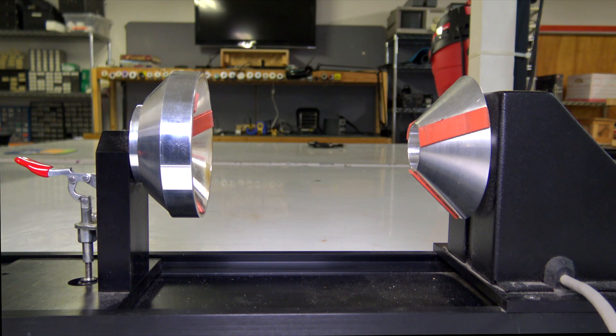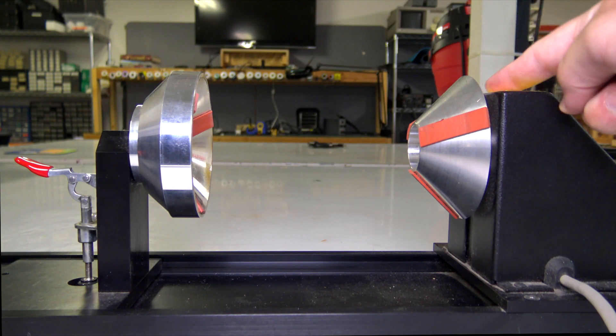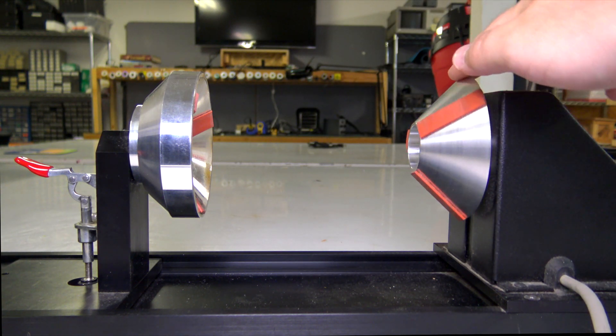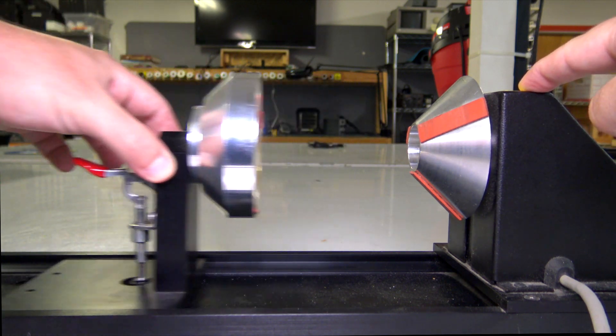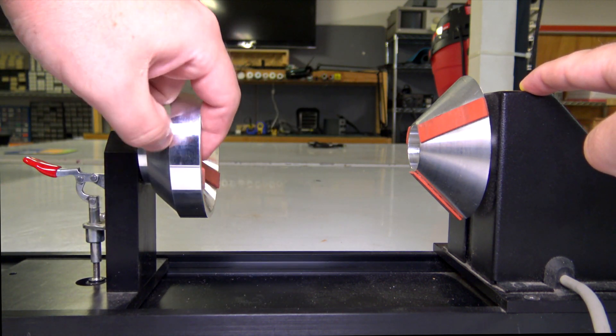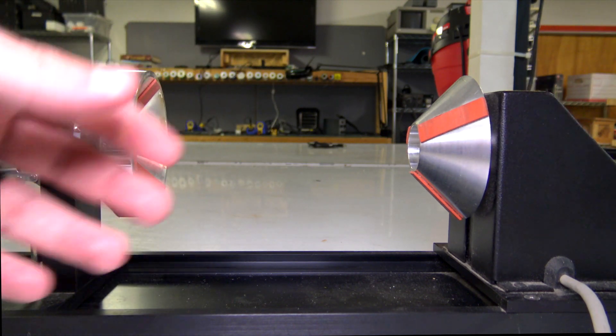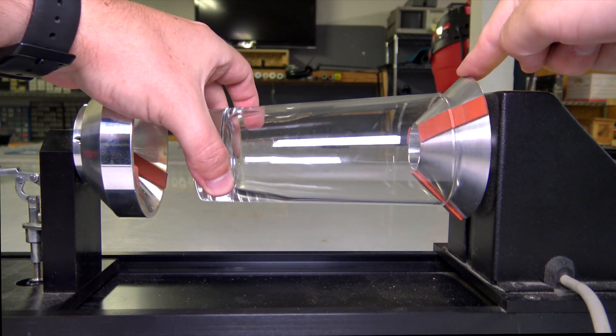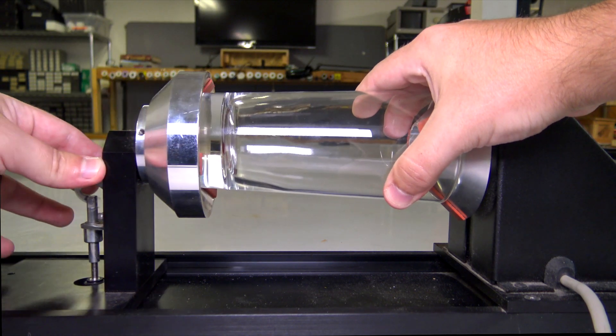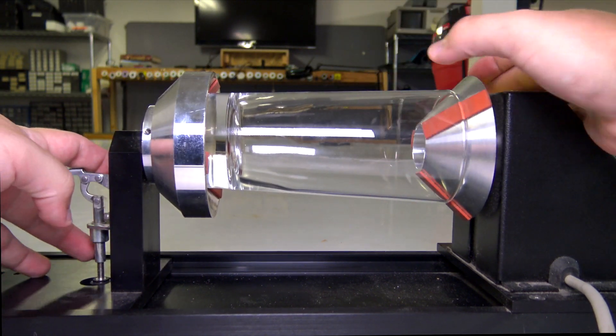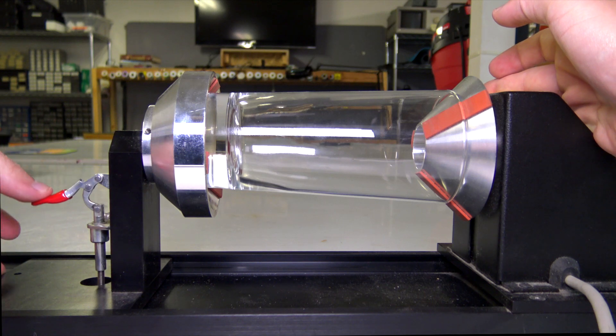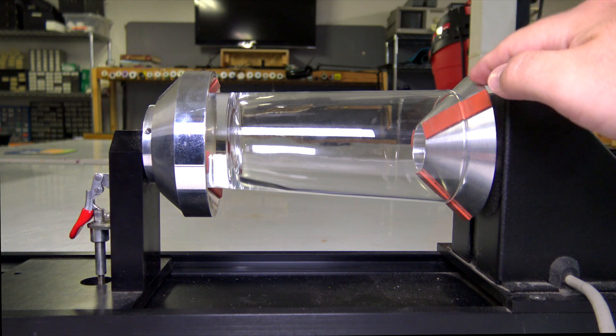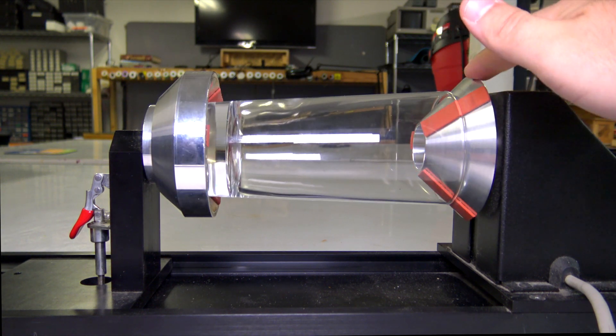So the rotary attachment itself is actually pretty simple. On one end we have a motor that gets connected to the laser so the laser can control it, and that motor is attached to this cone. Then on the other end we have a movable tailstock that also has another cone on the inside. What this lets us do is we can take whatever cylindrical object we want to engrave, insert it so that it's firmly up against the moving cone, and we can slide that tailstock up so that it's firmly inside. Then there's this little lever that we can use to lock in that tailstock.